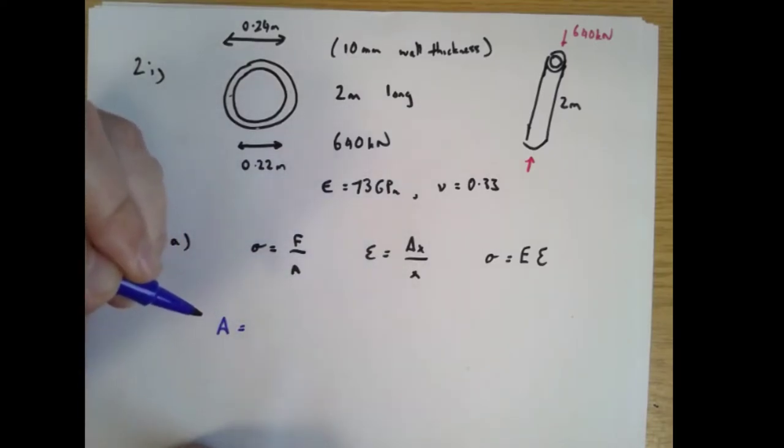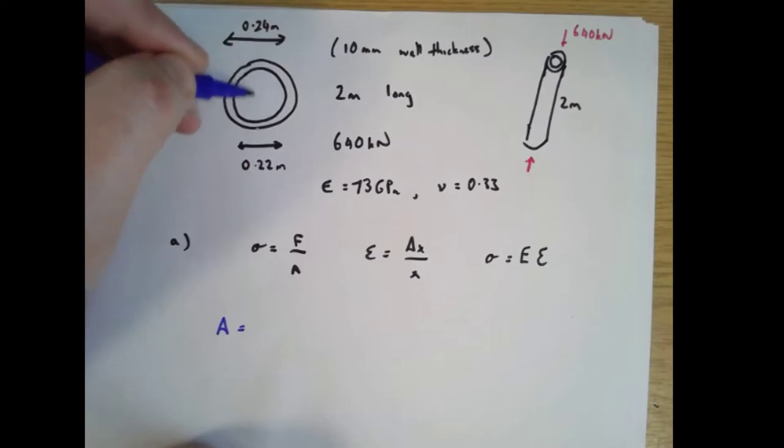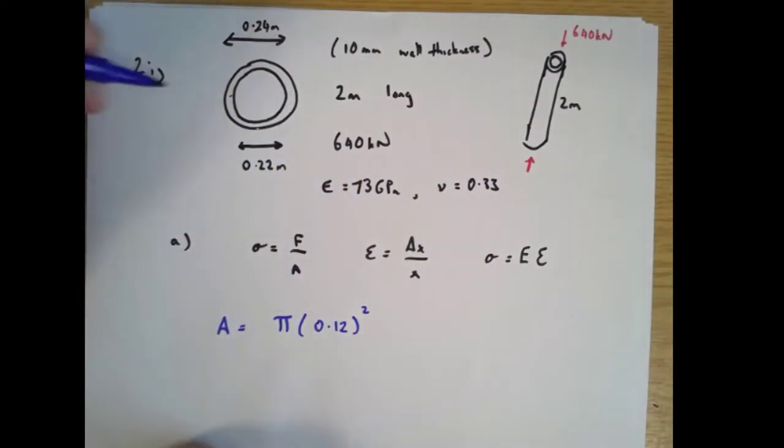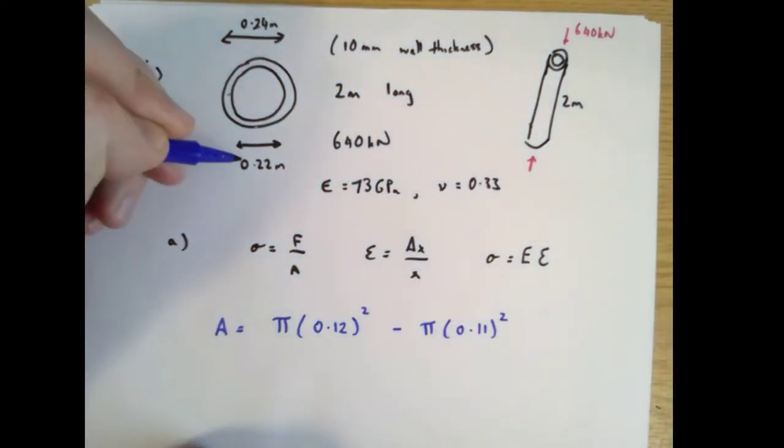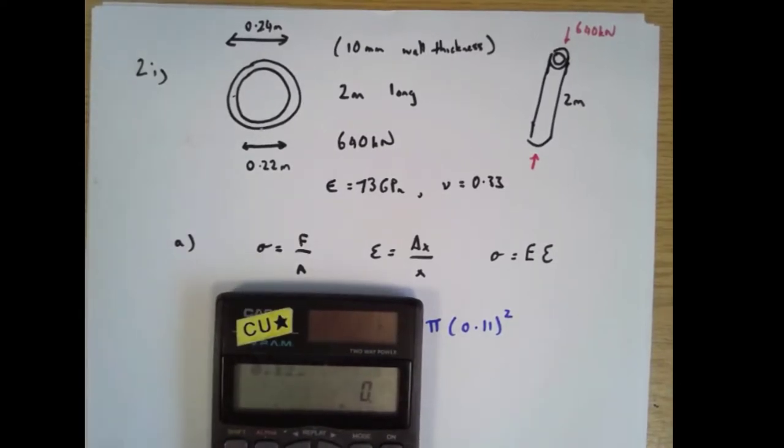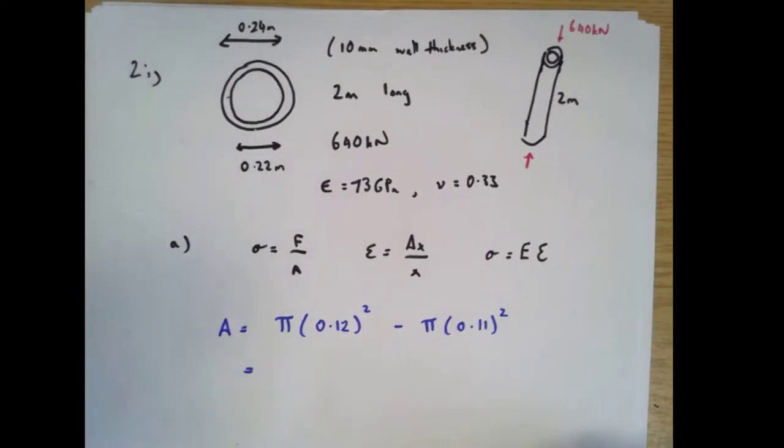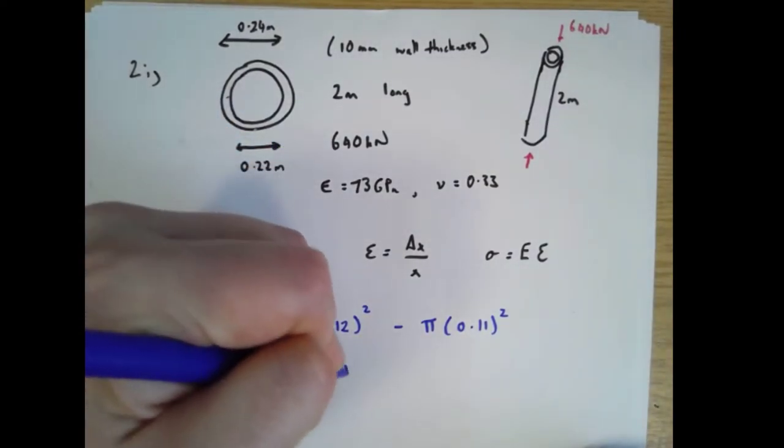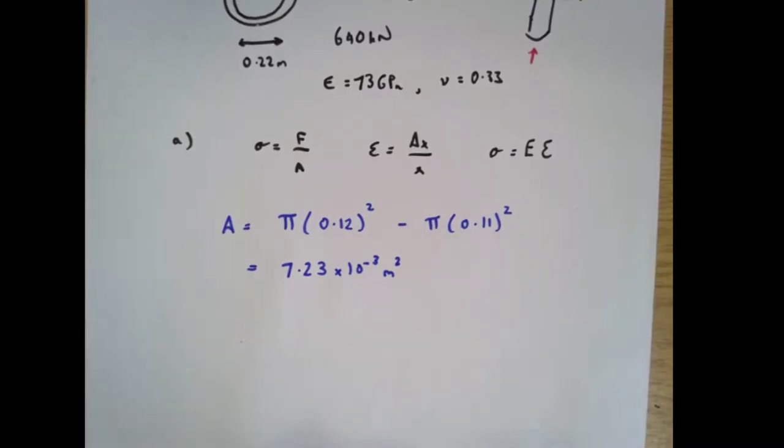So I'm going to start by calculating that. I'll say the area is the area of the outer circle minus the area of the inner circle here. So that's π times 0.12 squared, that's half of that 0.24, minus the area of the inner circle π r squared again. And this time 0.11 is half of that 0.22. So we say 0.12 squared minus 0.11 squared, multiply the whole thing by π. And that comes out to be 7.23 times 10 to the minus 3 square meters. So that's good.